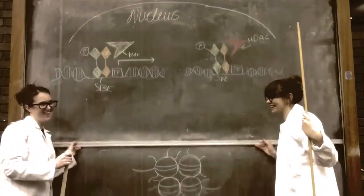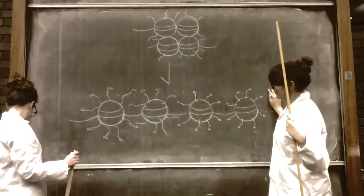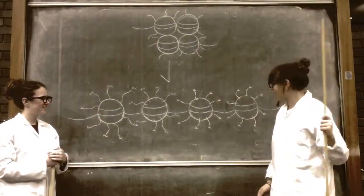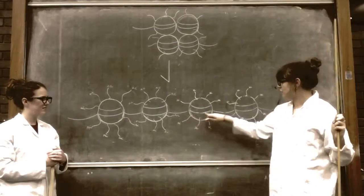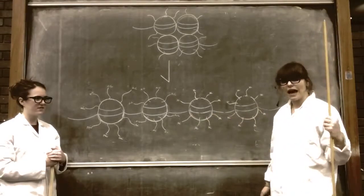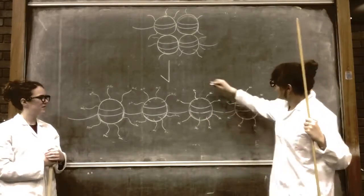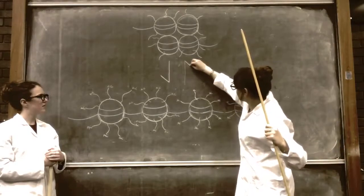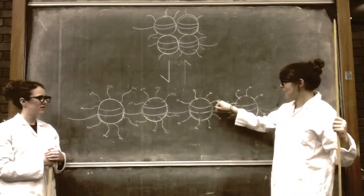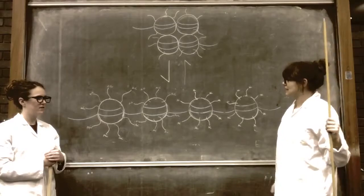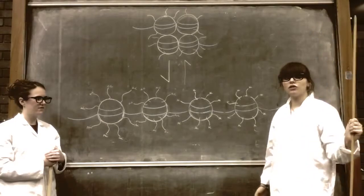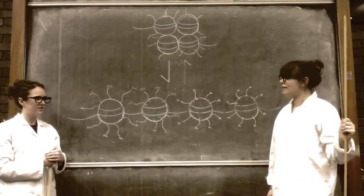But how? Well, this time we're going the other way. Instead of having the loose free structure where you're able to access bits of the DNA, it goes back to being a more compact structure as the N-terminal tails are no longer acetylated. Therefore you can't transcribe the genes anymore and they're switched off.